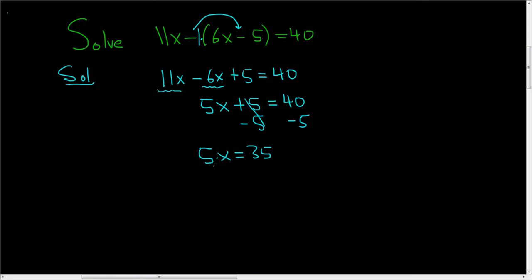The x is being multiplied by 5. So to finish, divide both sides by 5, and we end up with x equals 7. And that is the final answer.